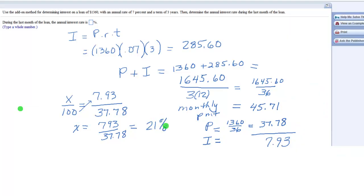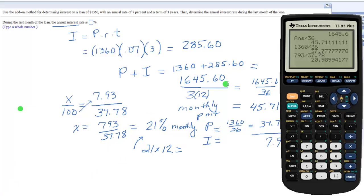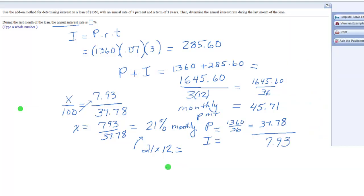So then, that would be a monthly interest, because that was during the last month of the loan. So to find the annual interest, because they want the annual interest, take that monthly interest times 12. So that's going to give us 21 times 12, 252%.